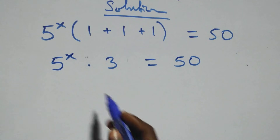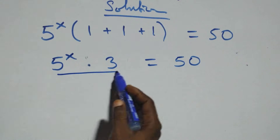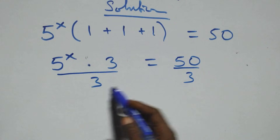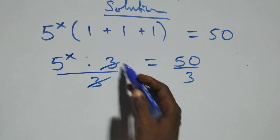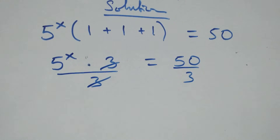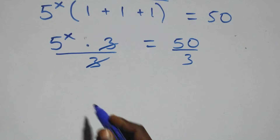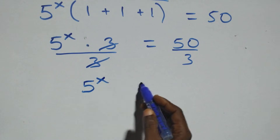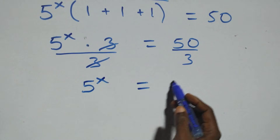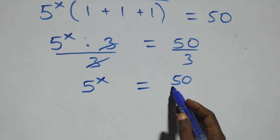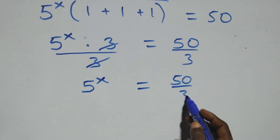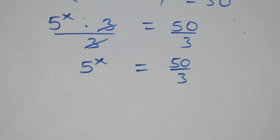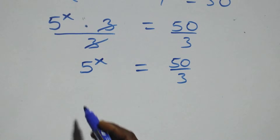We divide both sides by 3. The 3s cancel each other, and we have 5 raised to power x equals 50 over 3.